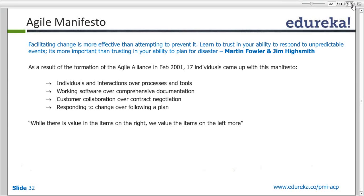In a coding example, for 3 plus 2 equals 5: in incremental, the first stage takes input, the second stage adds the values, and the third stage stores it in a variable x. In iterative, the first stage does 3 plus 2 equals 5, the second takes input from the user and refactors it, and the third returns the value 5. In incremental, we work in bits and parts then bind them together. In iterative, we work on everything together but enhance it step by step.